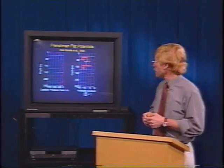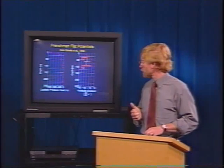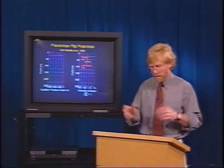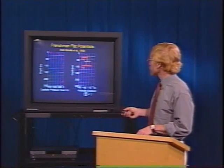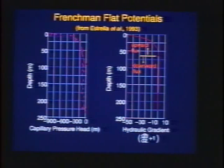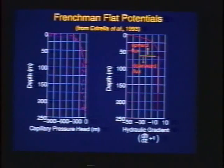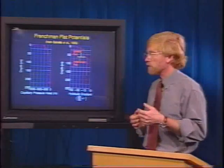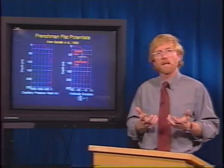A positive gradient implies a downward flux, and a negative gradient implies an upward flux, depending on sign conventions. What you see is that from the water table up to about 50–60 meters below the land surface, the gradient is essentially zero — slightly positive, indicating maybe a very small amount of downward flux. From about 60 meters below land surface up to the land surface, the flux is upward. So there's a divergence of flux at around 60–70 meters. This system is not at steady state.